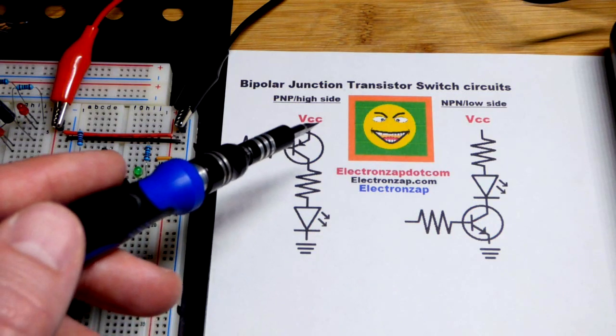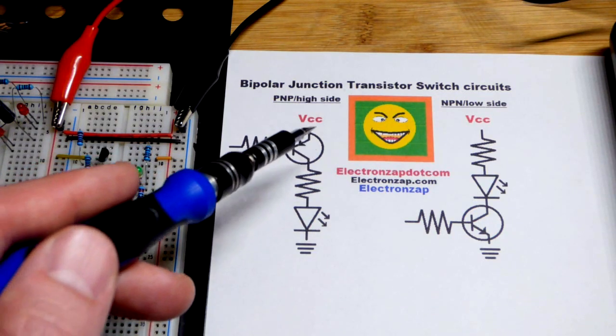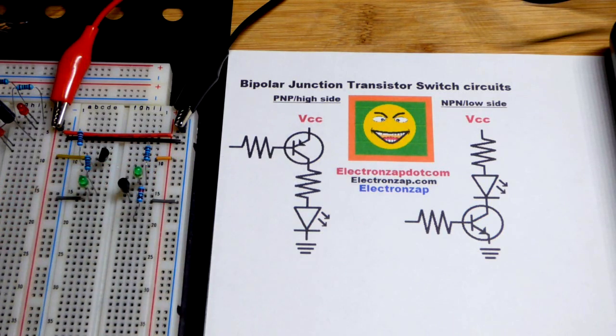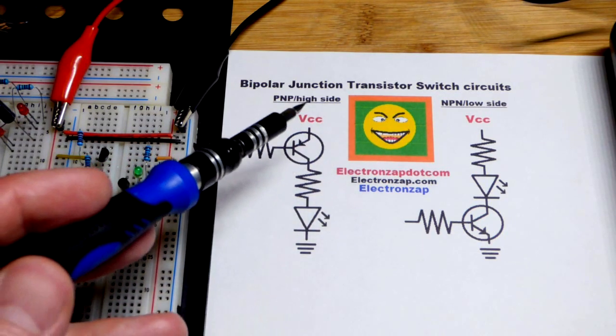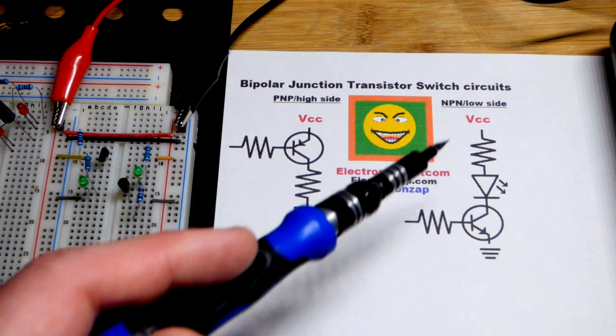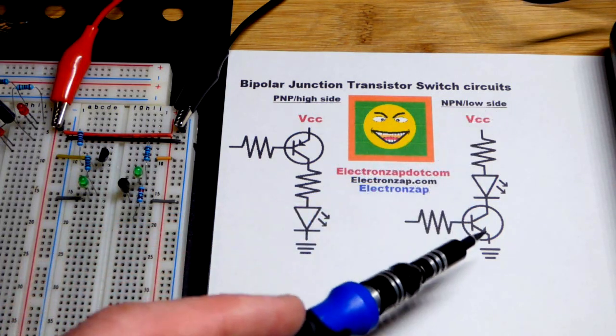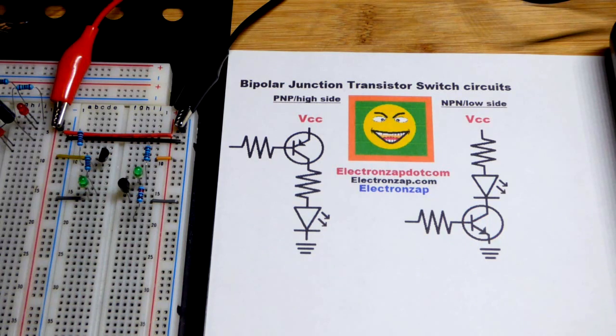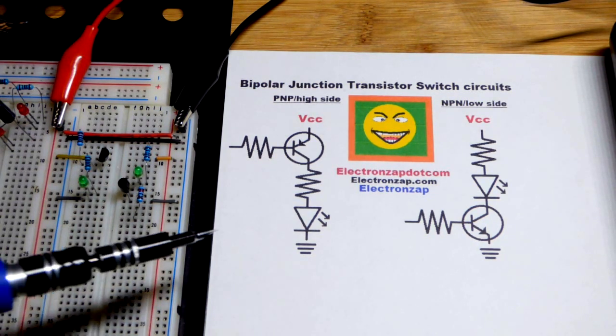And the emitter of the PNP bipolar junction transistor needs to be to the positive supply. So if you want a high side switch, you'll want a PNP bipolar junction transistor. If you want a low side switch, you'll want an NPN bipolar junction transistor.